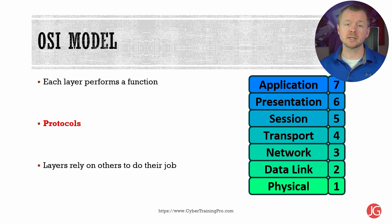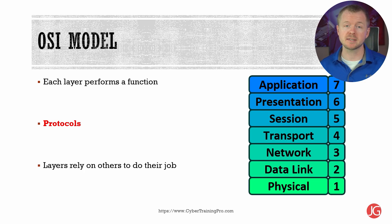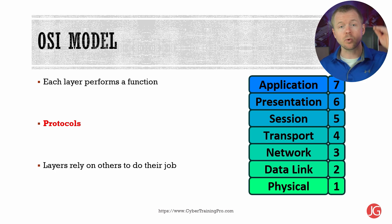We're actually going to go deeper into each one of these layers, but you need to know the layer names as well as the actual layer number. So for example, if I said what's layer four, you'd say transport layer. A few easy ways to remember these layers are 'all people seem to need data processing' and 'please do not throw away sausage pizza.' Essentially, data transfer is initiated at the application layer on the sender side, then it works its way down the OSI model, adding information at each layer. We call this encapsulation.